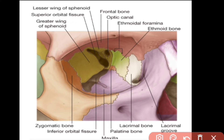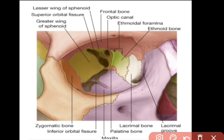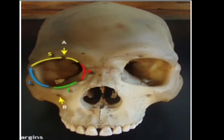Seven bones form the orbital cavity. From lateral to medial these are: zygomatic bone, maxillary bone, lacrimal bone, ethmoidal bone, palatine bone, sphenoidal bone (including the lesser wing, greater wing, and body of the sphenoid), and the frontal bone. A useful mnemonic: remember the four sinuses — sphenoidal, frontal, ethmoidal, and maxillary — and add the zygomatic, lacrimal, and palatine bones.